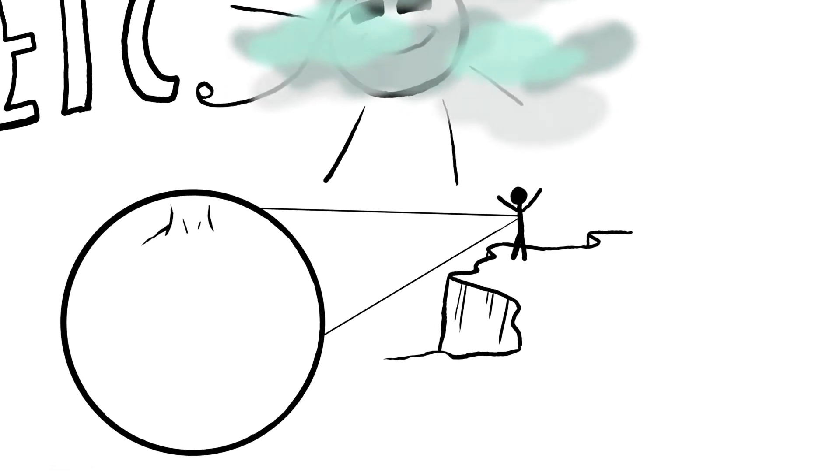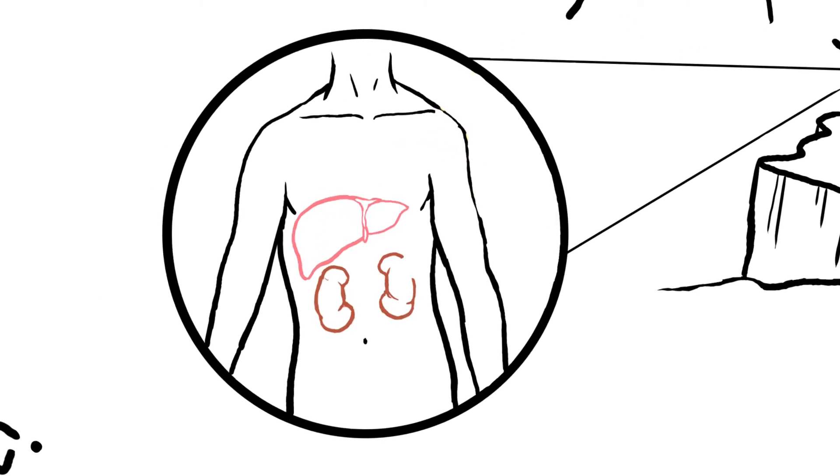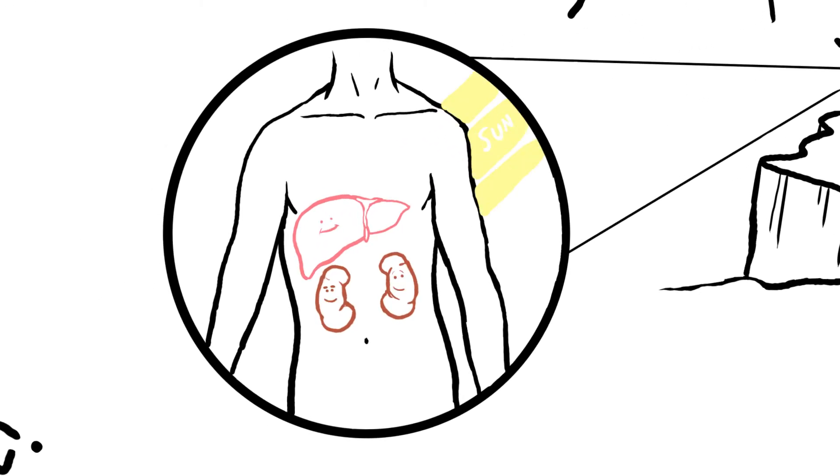Our body uses the sun's rays to help us make vitamin D, which is then distributed to our liver and kidneys. So treat them well for maximum absorption.